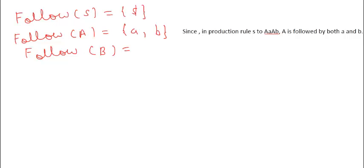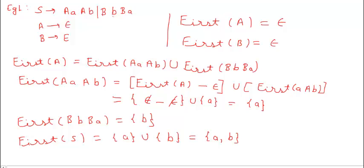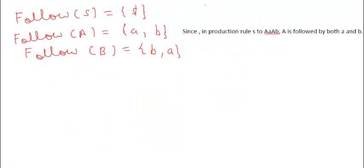FOLLOW(B) equals {b, a}, since in the production rule S → B a B, B is followed by both small-b and small-a. So similarly, just as A was followed by a and b, B is also followed by b and a.